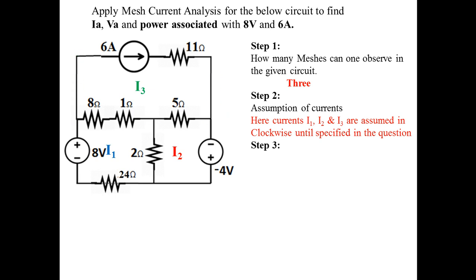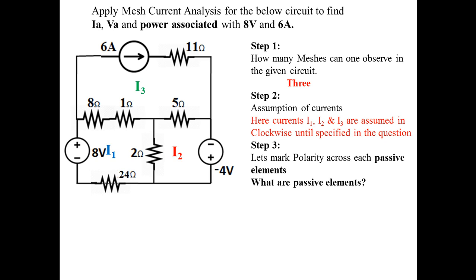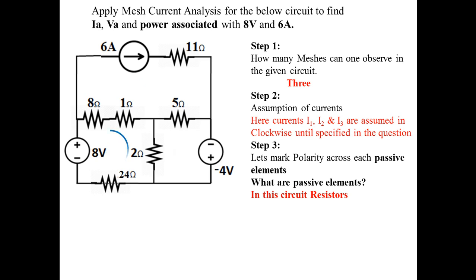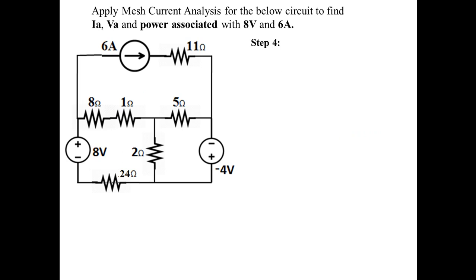Next, let's mark the polarity across passive elements. Passive elements are the elements which absorb, dissipate, or store energy — in this circuit, resistances. You can observe the previous video on how to mark polarities across passive elements more clearly. Let's mark the polarities for the I1 mesh, I2 mesh, and I3 mesh.